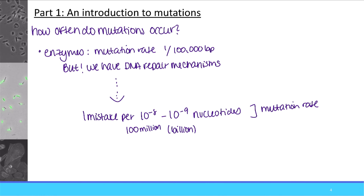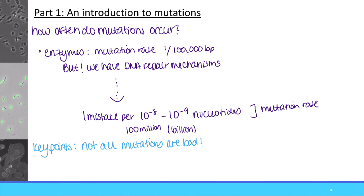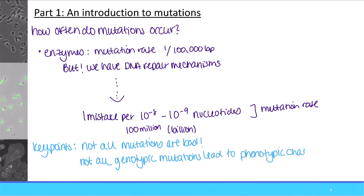There are a couple of other things to think about when it comes to mutations. When we think of one mistake per billion base pairs, we might think that's horrible — but it turns out that not all mutations are bad. Evolutionarily speaking, they can definitely be advantageous, and in some cases we don't even see a difference. Something to keep in mind is this idea that not all genotypic mutations lead to phenotypic changes. Just because there is a mutation doesn't mean it's bad, and it does not mean that a genotypic change will lead to a phenotypic change.